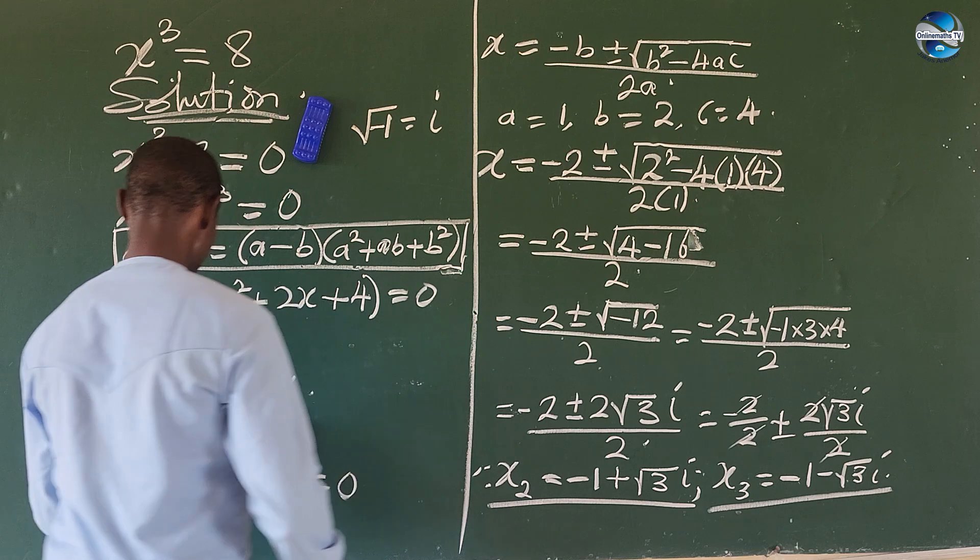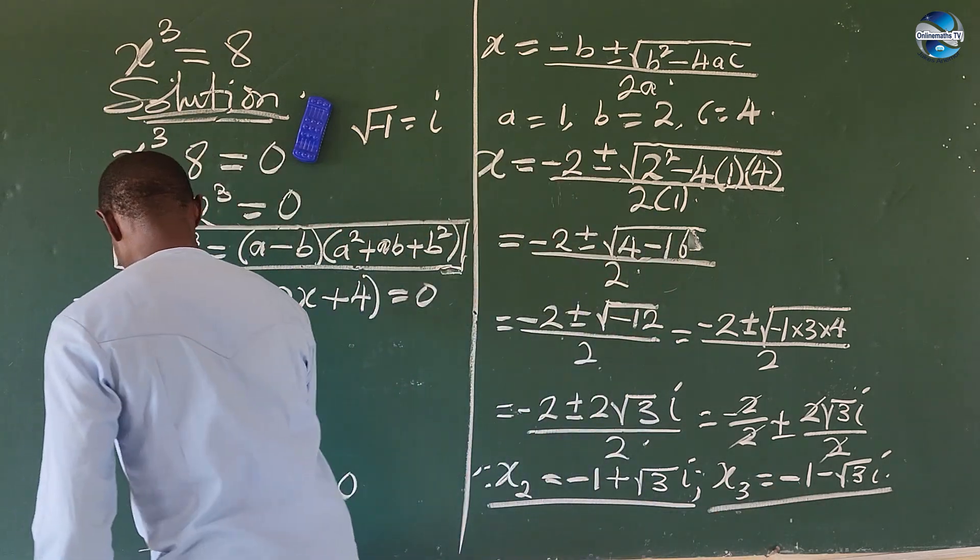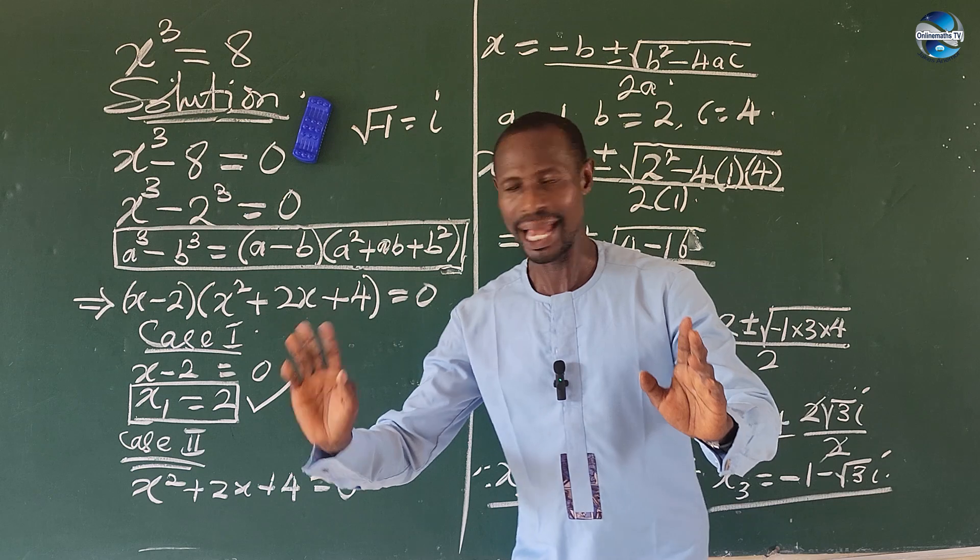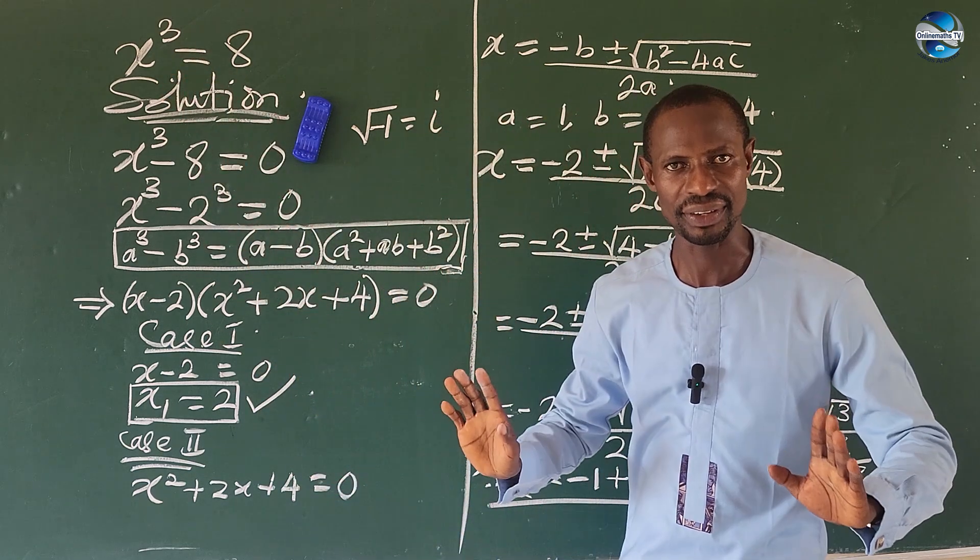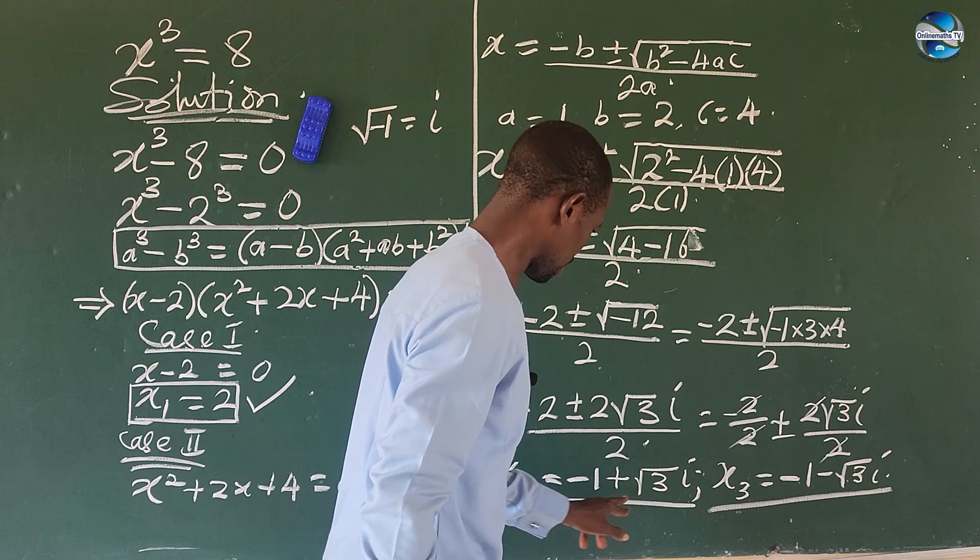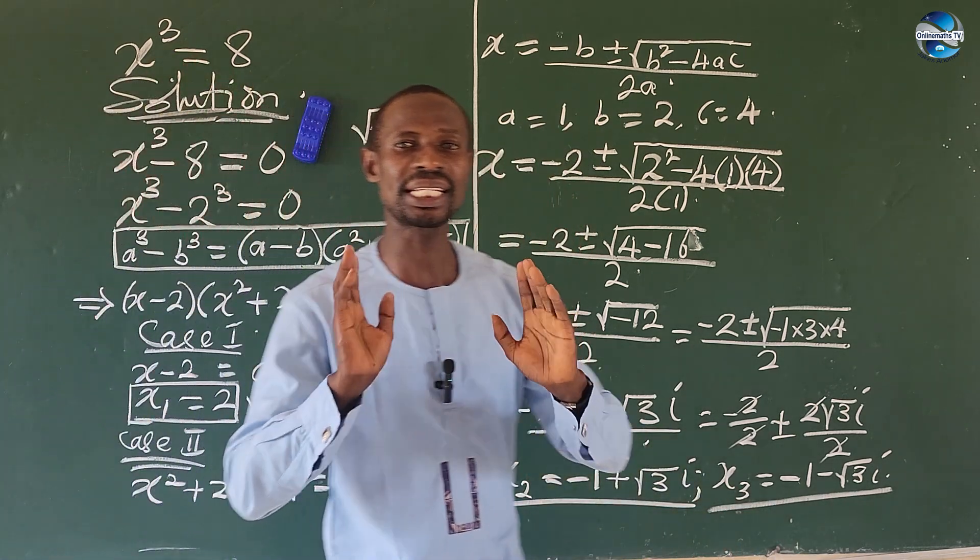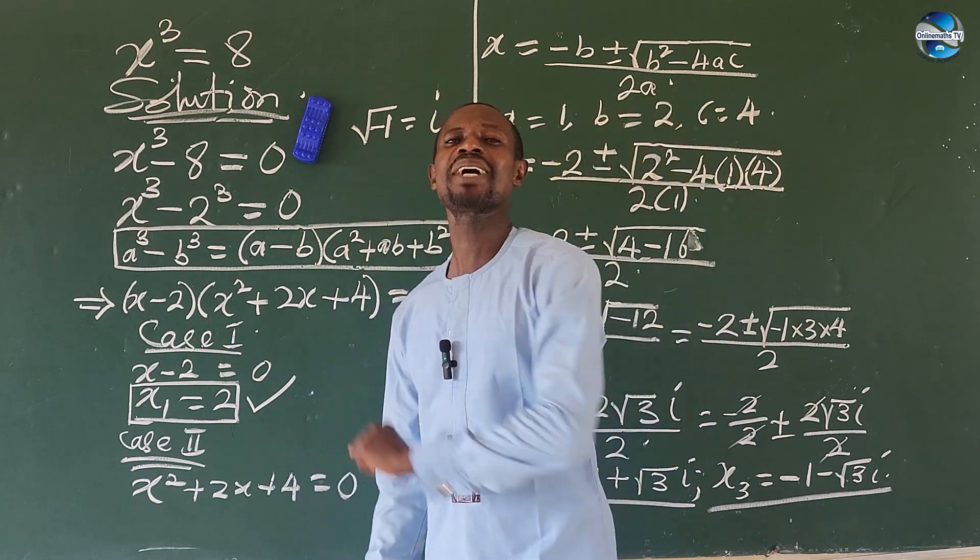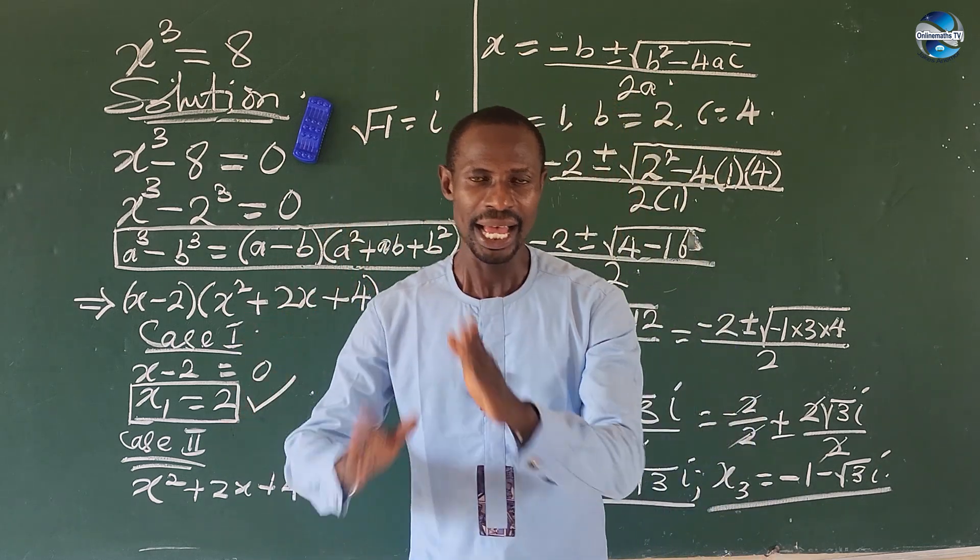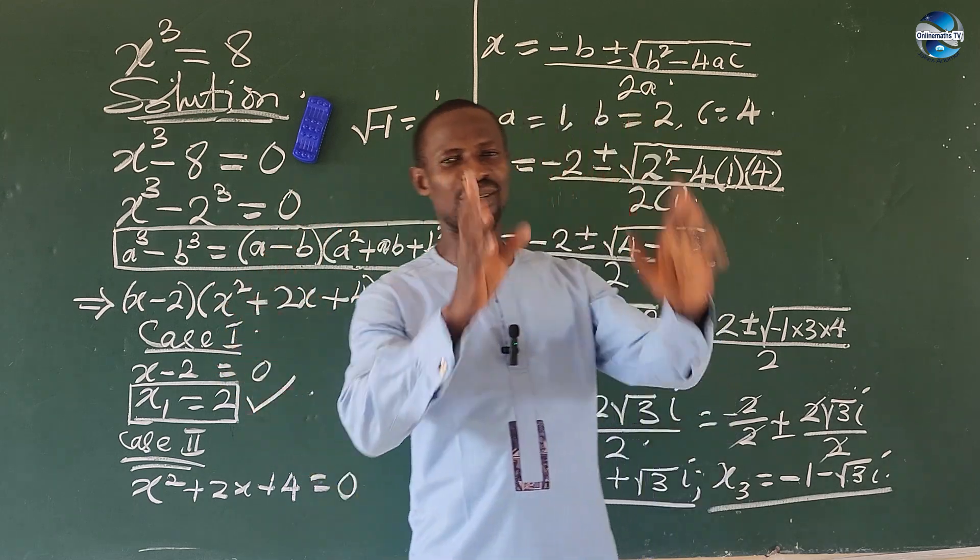So if you go ahead to plug this value into this, it will satisfy the equation. At the same time, if you plug this and this into this original equation, then we satisfy the original equation. So this marks the end to this nice, simple algebraic exponential equation.